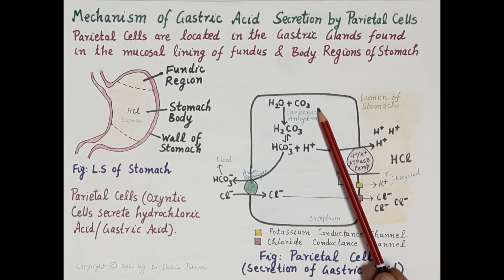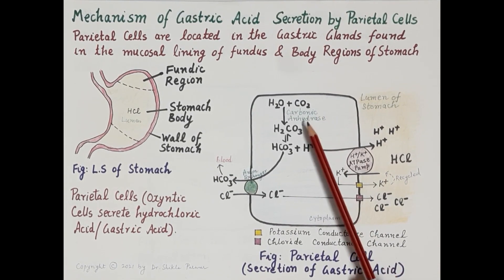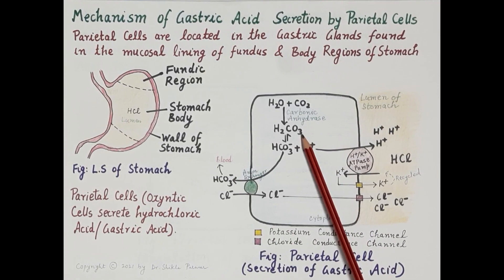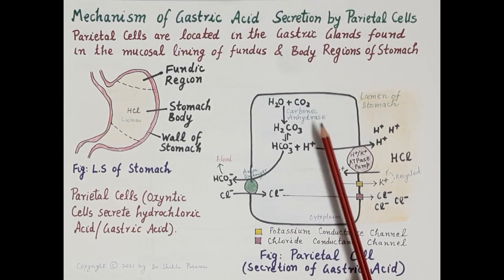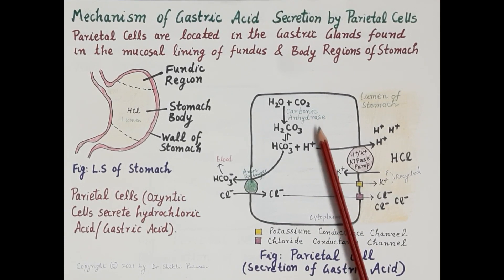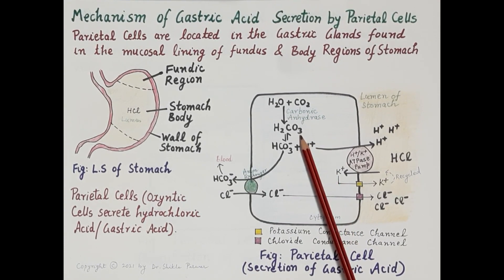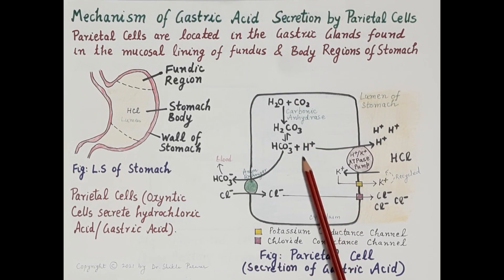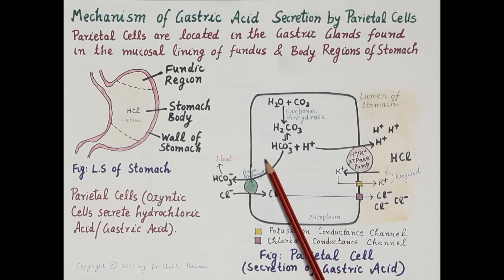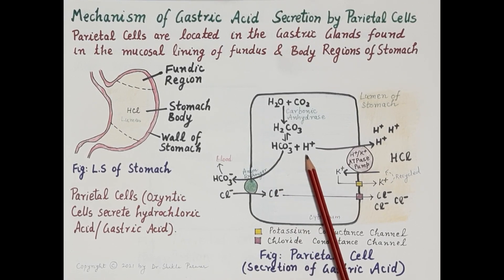Now let's discuss the mechanism. First, water and carbon dioxide combine in the cytoplasm of the parietal cell to produce carbonic acid. This reaction is catalyzed by the enzyme carbonic anhydrase. The carbonic acid then spontaneously dissociates into hydrogen ions and bicarbonate ions.